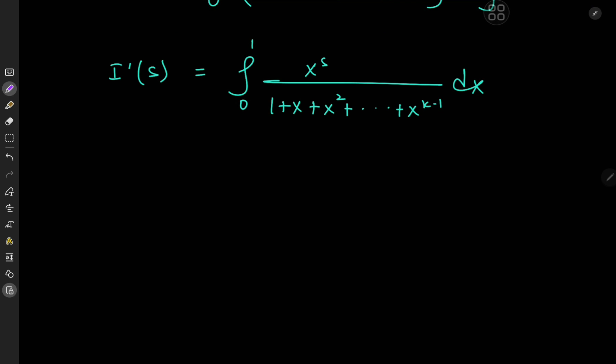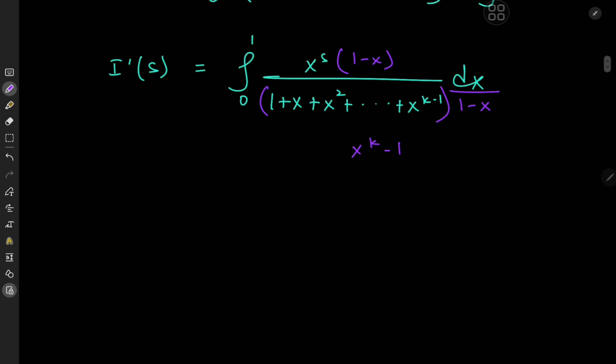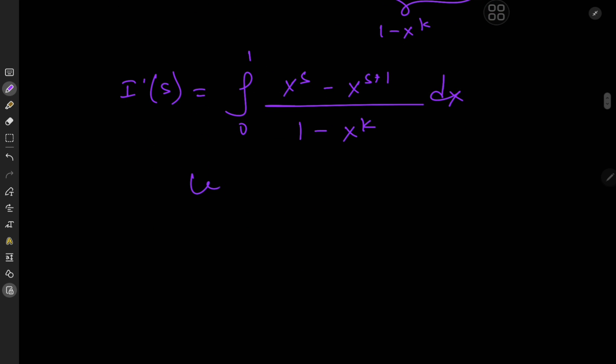We have I prime of s being equal to the integral from 0 to 1 of x to the s divided by 1 plus x plus x squared plus all the way up to plus x to the k minus 1 dx. This really is a much nicer integral to work with because if I expand using 1 minus x, then notice in the denominator this is basically the factorized version of 1 minus x to the k.